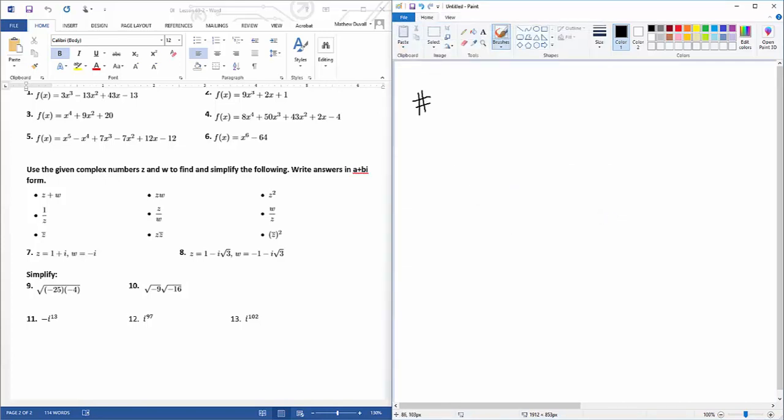Number 12, i to the 97 power. You have to divide the 97 by 4, so your remainder is 1, and so that means that you're left with i to the first power, which is just i.